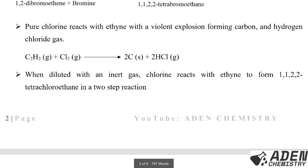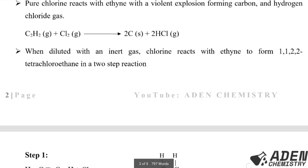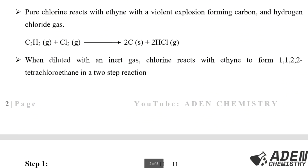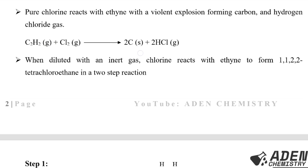Pure chlorine reacts with ethyne with a violent explosion, forming carbon and hydrogen chloride gas. The equation is: C₂H₂ + Cl₂ → 2C + 2HCl. When diluted with an inert gas, chlorine reacts with ethyne to form 1,1,2,2-tetrachloroethane in a two-step reaction.